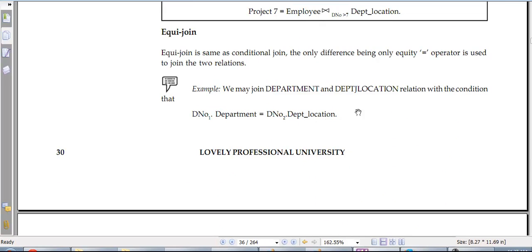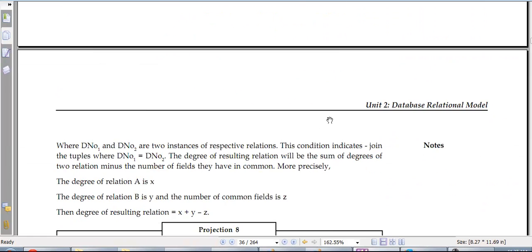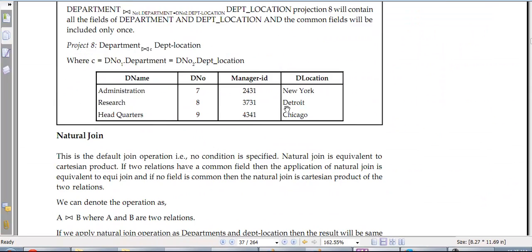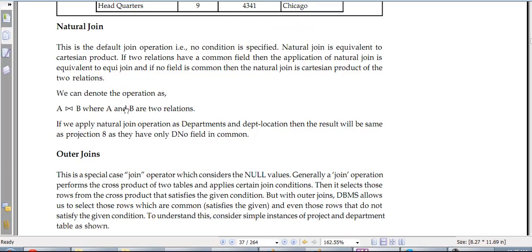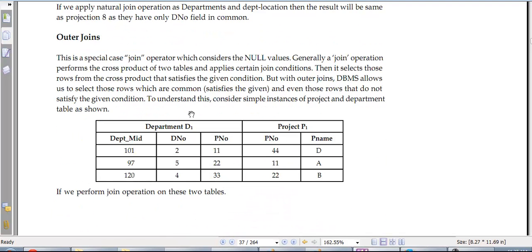Then you have equi-join. It is the same as conditional join, the difference being the equal-to operator is being used. So again you join based on equal-to. Then we have natural join. This is the default join, no condition specified. Next is Cartesian product: two relations with a common field form a Cartesian product. Again the symbol is the same.